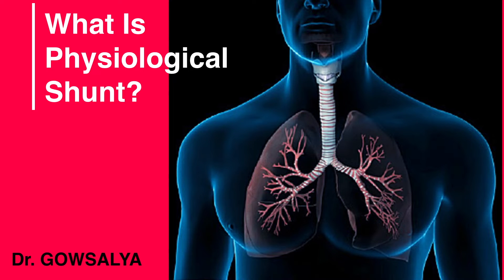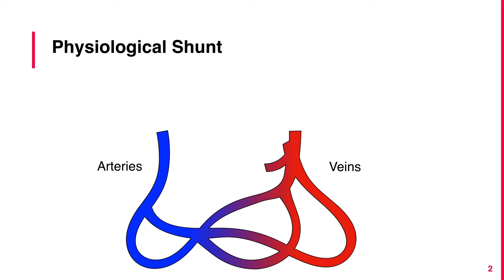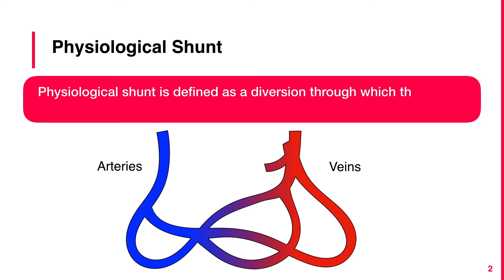Physiological Shunt is defined as the diversion through which venous blood is mixed with arterial blood.